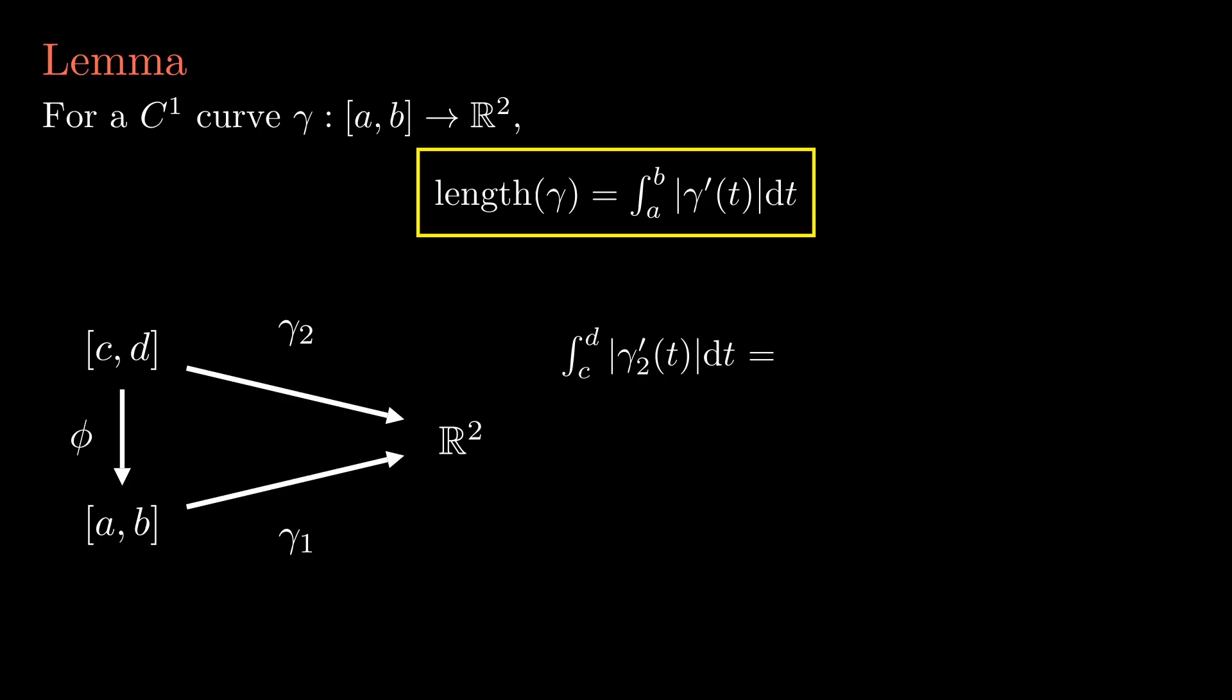We can write the integral with respect to the parametrization gamma 2. By our chain rule, the length of gamma 2 prime is the length of gamma 1 prime times phi prime. Now this integral is yelling to us, do a change of variable. We put u equals phi of t, which gives du is phi prime of t dt. We substitute this back into the integral and get the right-hand side of the equation, but now with respect to the parametrization gamma 1.